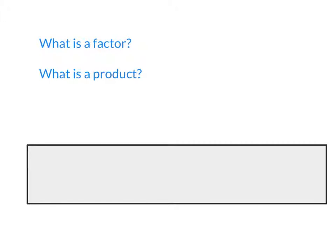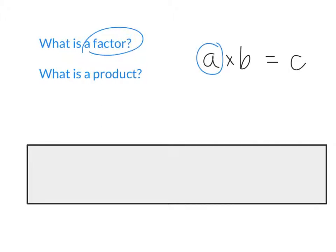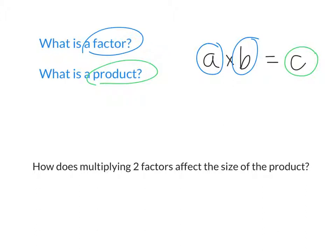What is a factor and what is a product? If we have A times B equals C, A and B are the factors, and C is the product. So today we're comparing how big the product is compared to the factors. How does multiplying two factors affect the size of the product? Is it going to get bigger or smaller? Go ahead and have that discussion at your table groups.